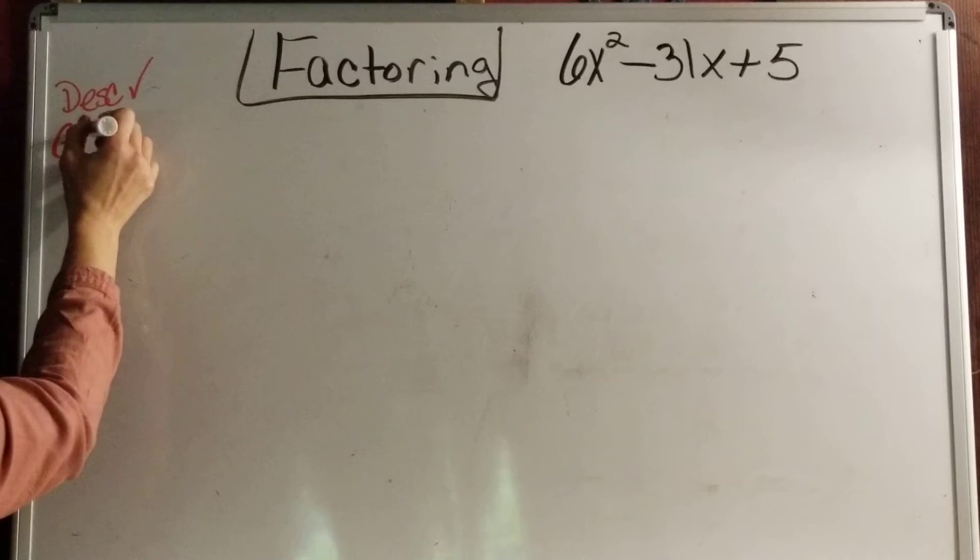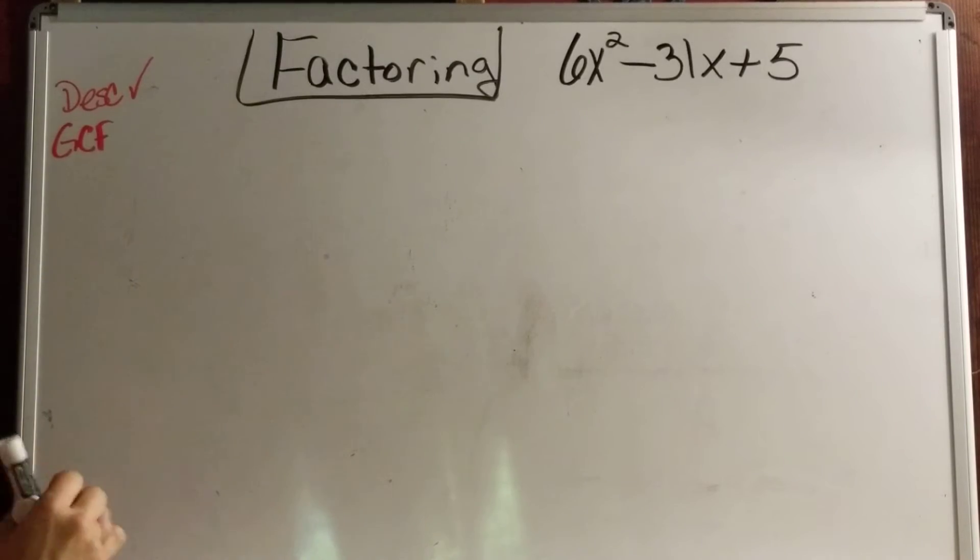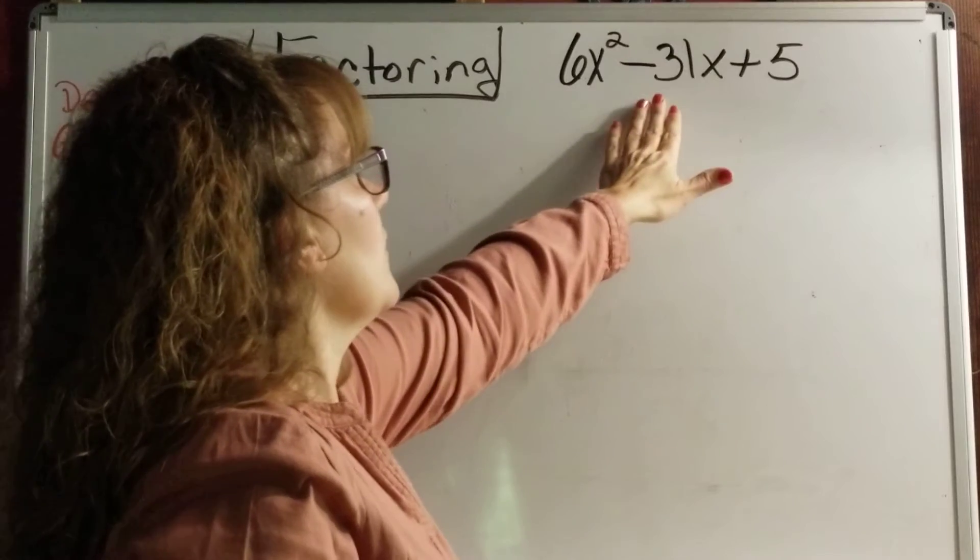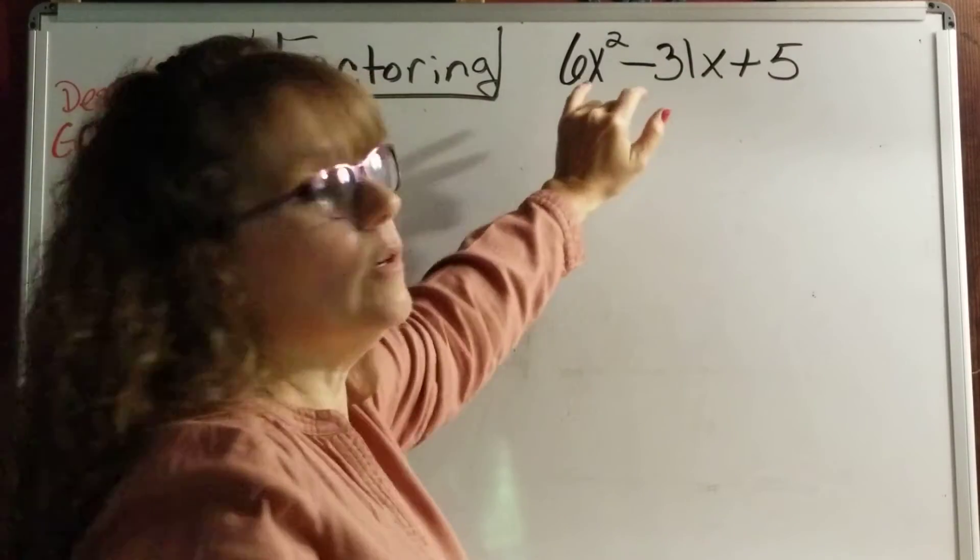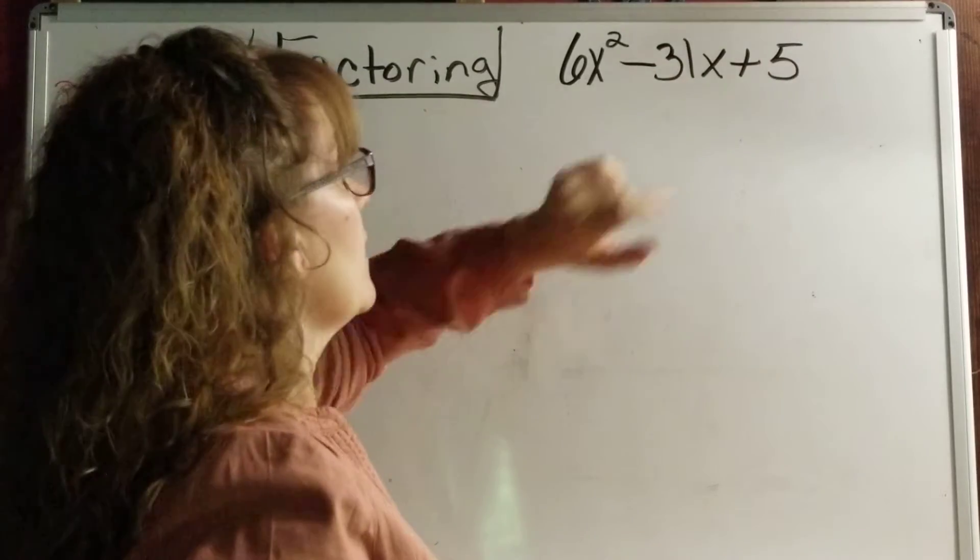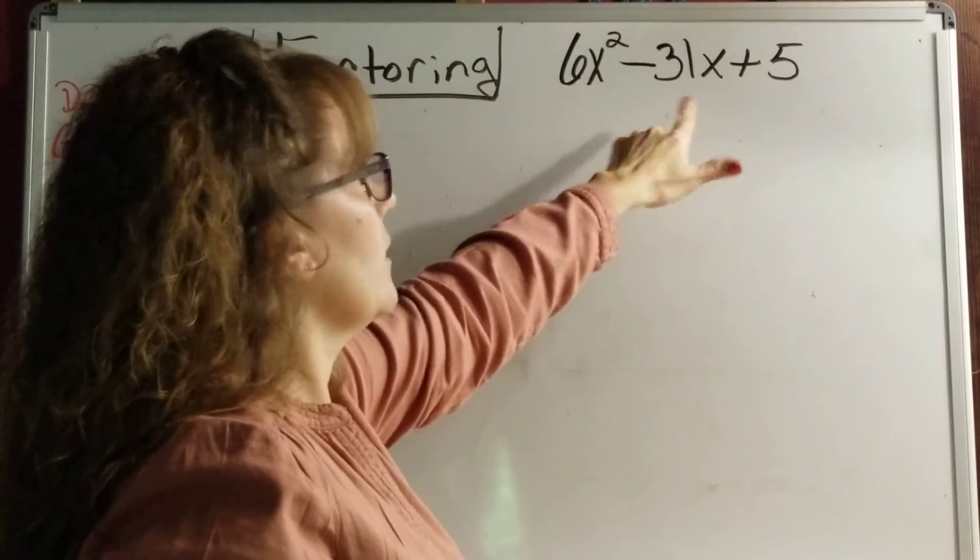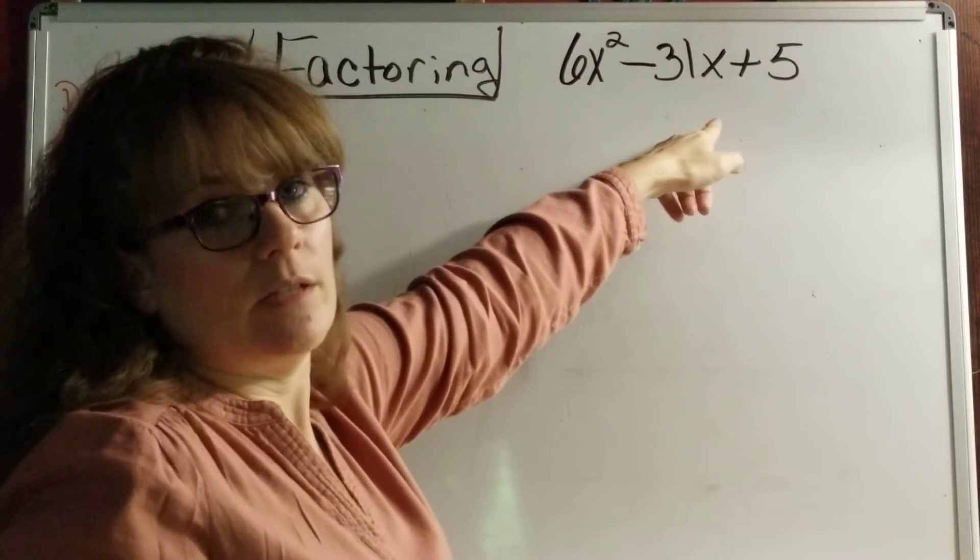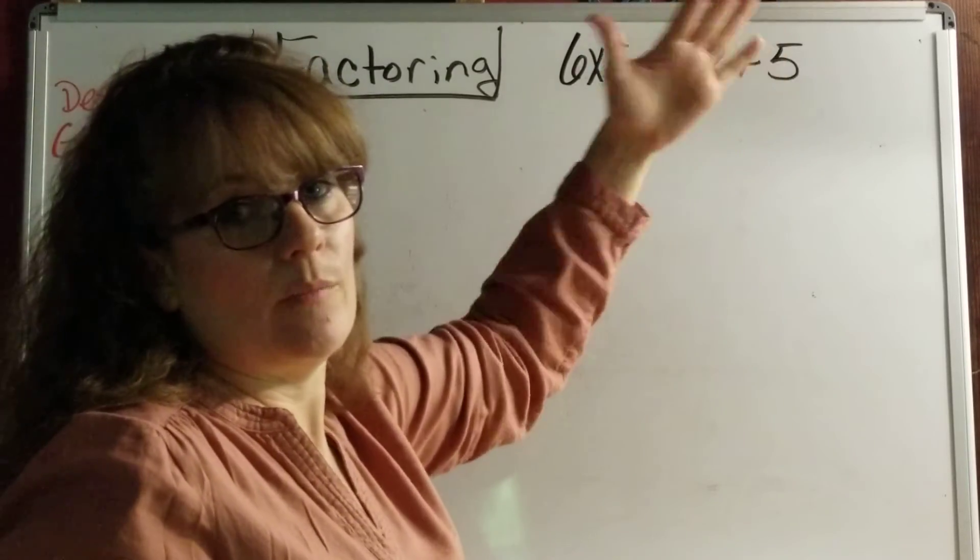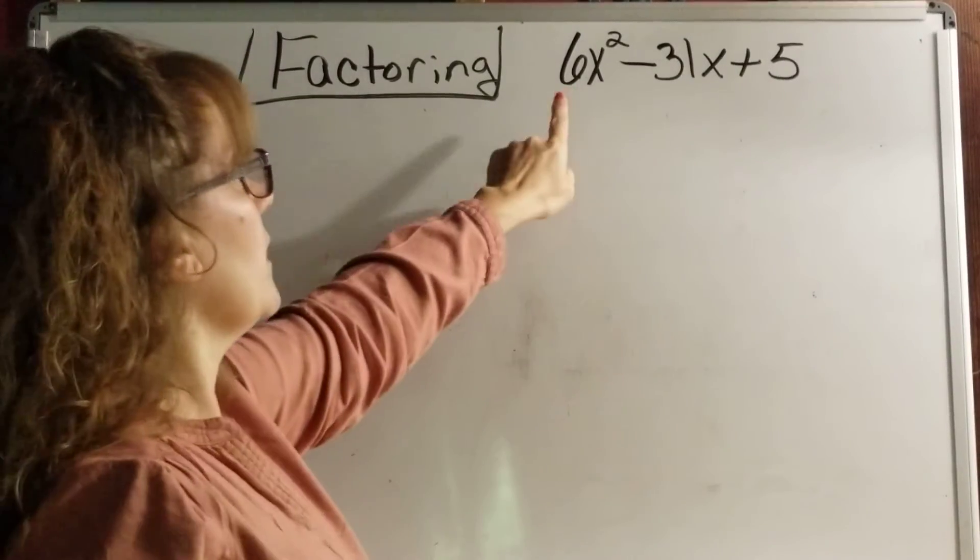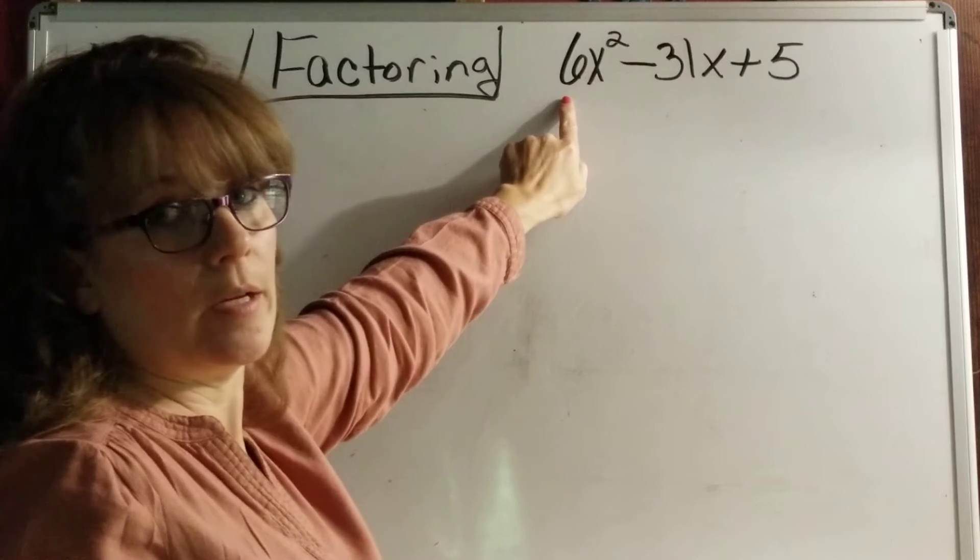Second, I'm going to factor out the GCF. Well, let's look at it. What is my GCF? Well, I have 6x squared, I have 3x, and a 5. So there's only two terms with an x value, so x is not it. That's a 6, a 31, and a 5. Well, 5 won't go into 31, and 6 won't either.